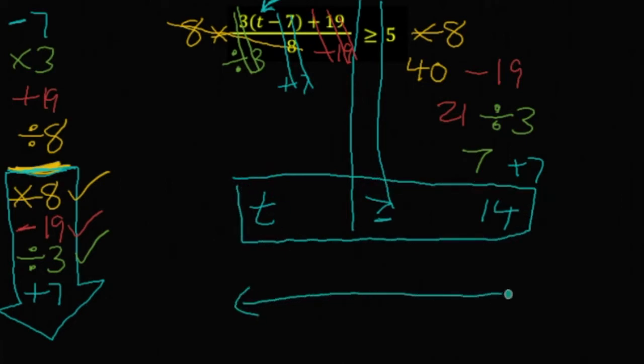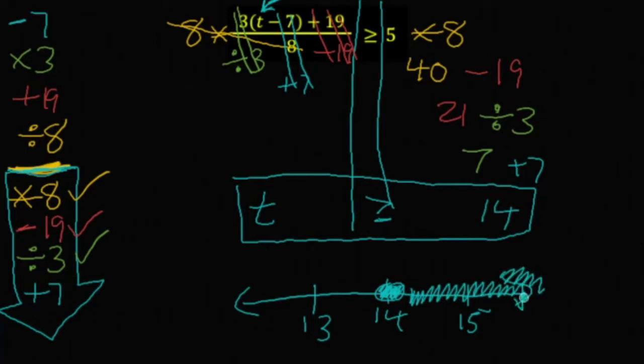Graphing that, t is allowed to equal the number in question. So, we'll shade in a circle at 14. And t is also allowed to be bigger than 14. So, we'll shade toward the larger numbers on the number line.